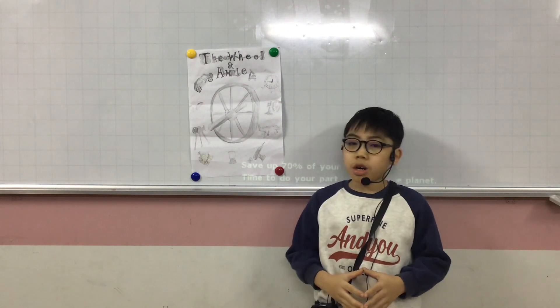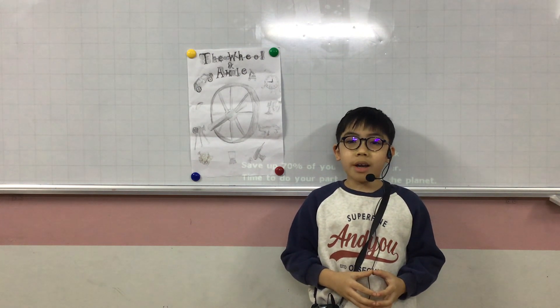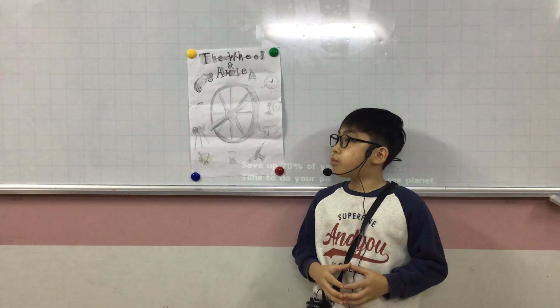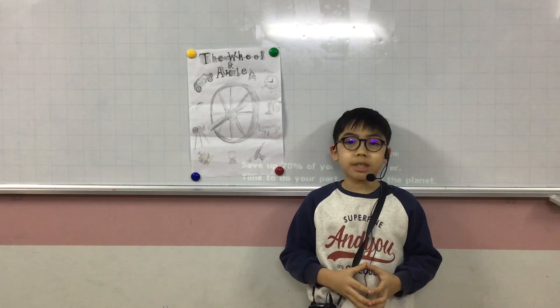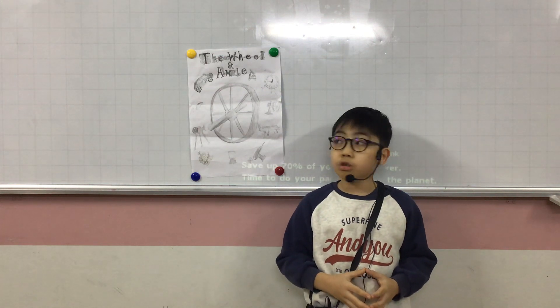First, we'll talk about the origins of the wheel and axle. Second, we will describe what it's used for. Third, I'll talk about the price and where to buy. And the final part is the conclusion.